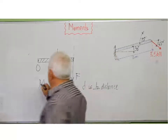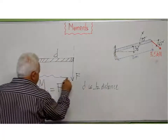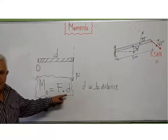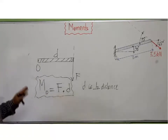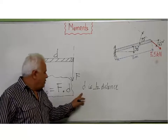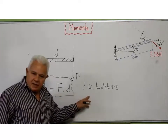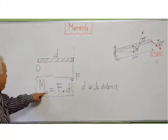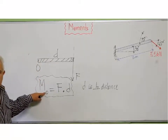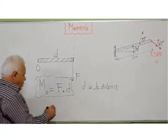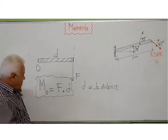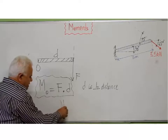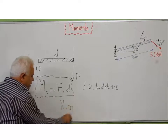So M, in scalar formulation, is F times D. I emphasize that D is the perpendicular distance to the point where I want to calculate my moment. Of course, the unit of the moment is F in newtons times D in meters.